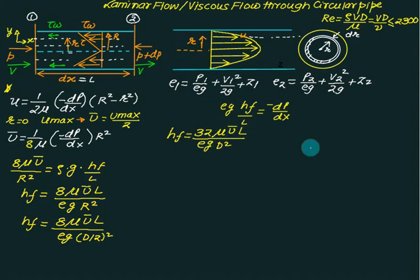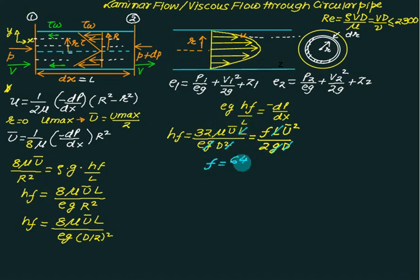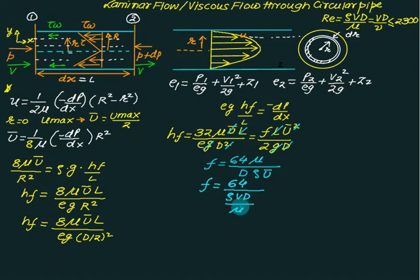The Darcy-Weisbach head loss equation is hf equals f times L times V squared divided by (2gD). Equating this with the Hagen-Poiseuille result and solving for the friction factor f, terms g, D, L, and one u_bar cancel, leaving f equals 64 mu divided by (rho times V times D). Since rho V D divided by mu is the Reynolds number, the friction factor for laminar flow is always f equals 64 divided by Re.